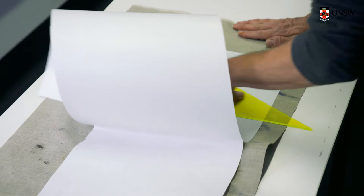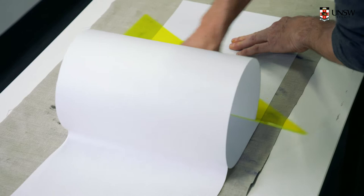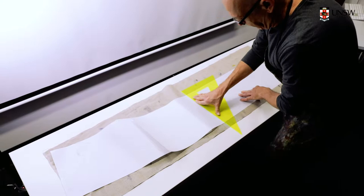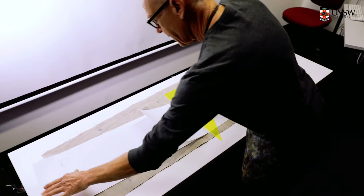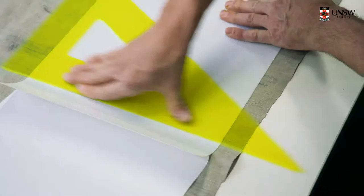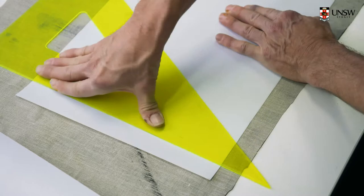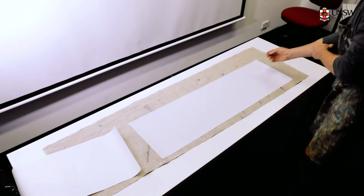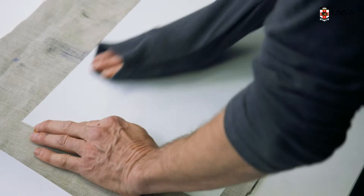Make sure we get no creases in the fabric. I'm sure there are easier ways to do this but this works for me. And there we go, just smooth it out. The glue adheres for the whole piece.